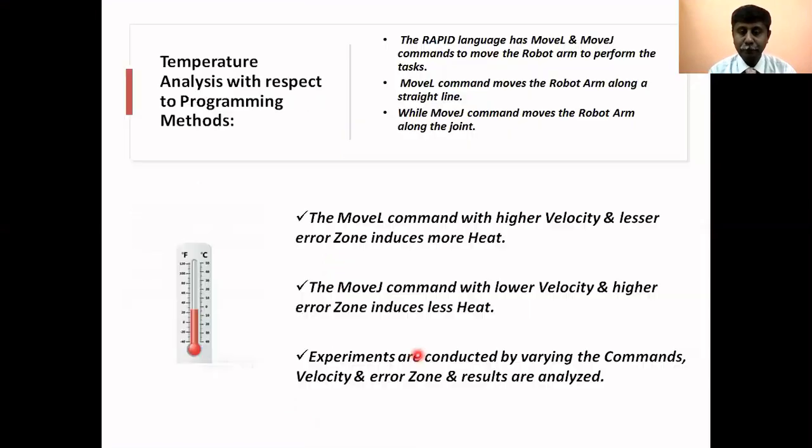The robot has two methods of programming. It has a Move L command and a Move J command. The Move L command makes the robot end effector move along a straight line. The Move J command moves along an arc - only one joint moves and it moves along an arc and generates lesser heat.